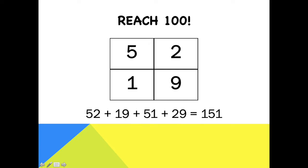Those four single digits, I can make some two-digit numbers. Reading across, I've made 52 and 19, and reading downwards, I've made 51 and 29. And now I'm going to add those four numbers together.